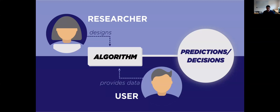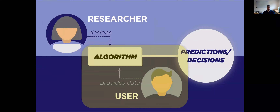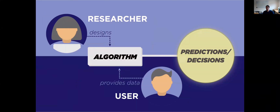To dive into this, let me talk about the current way that machine learning algorithms are applied and point out where the flaw is that makes it hard to ensure safety. A researcher designs an ML algorithm and provides it to the community as pseudocode or a software library. The user then applies this to a specific problem by providing training data, which the algorithm uses to train a model that makes decisions or predictions. The challenge is that the burden of ensuring the algorithm is well-behaved for the application at hand falls entirely to the user.